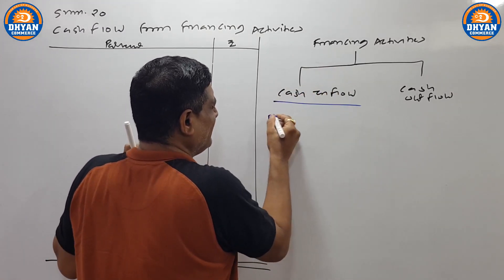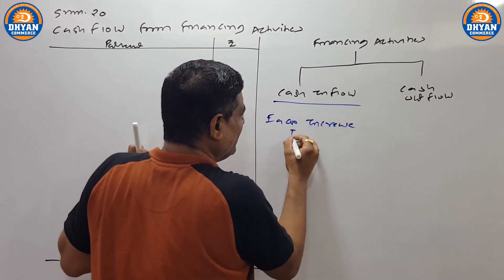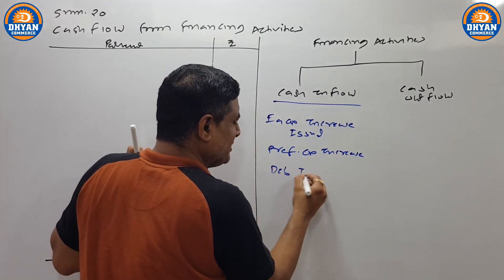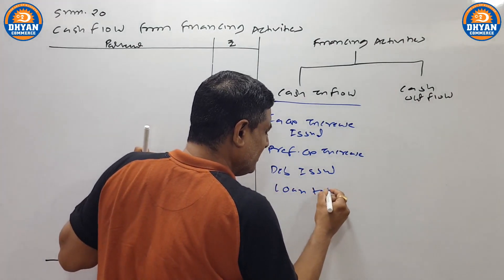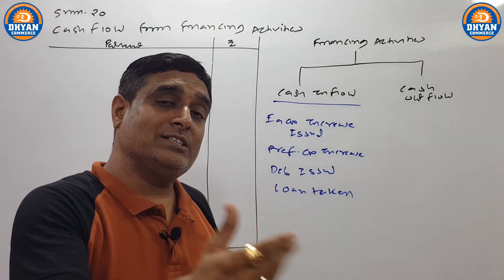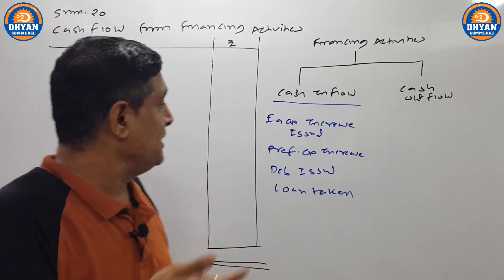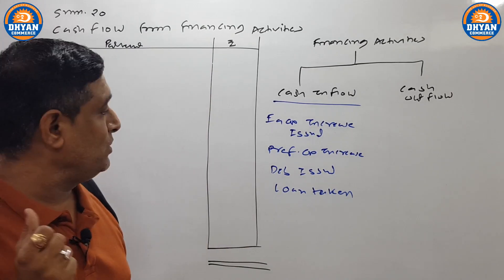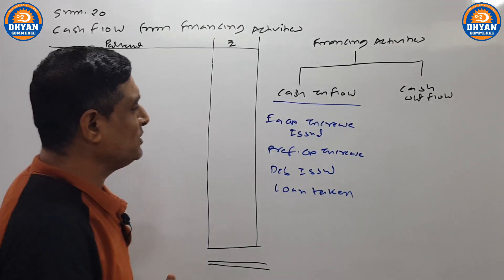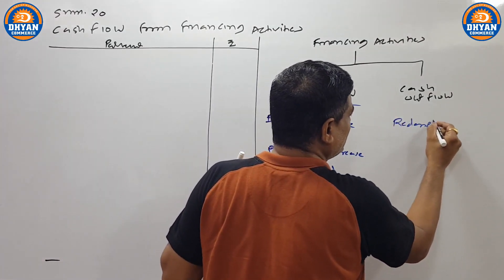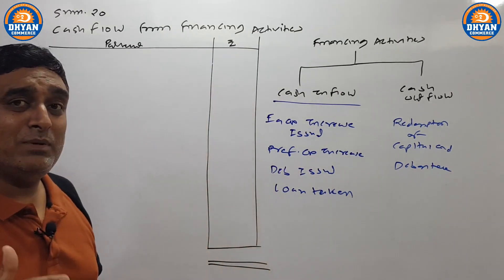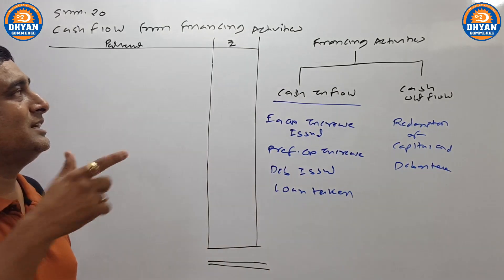When any equity capital increases or shares are issued, or preference share capital increases or is issued, or debentures are issued, or a loan is taken — in these different situations, the business receives money. For example, if last year share capital was 13 lakh and current year is 15 lakh, then 2 lakh worth of shares were issued during the year — that is cash inflow. Preference share issued, value increases — cash inflow. Debenture issued, value increases — cash inflow. Loan liya — cash inflow, that is borrowed loan. For cash outflow, we go to redemption of capital and debenture — returning money to shareholders of preference, equity, debenture, or repaying loans or paying debenture interest — that is called financing activities.